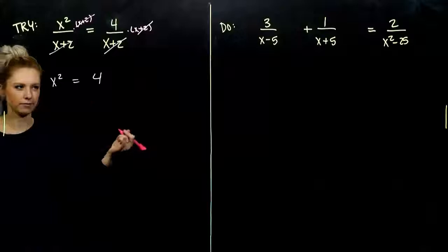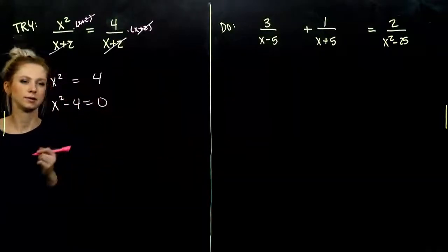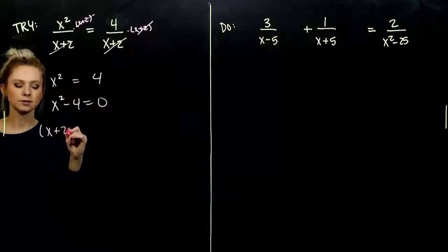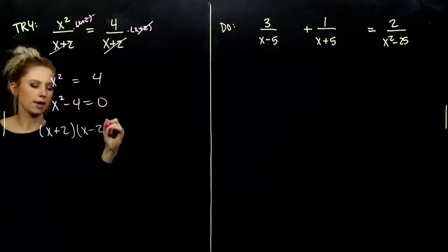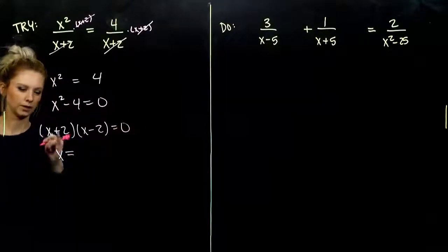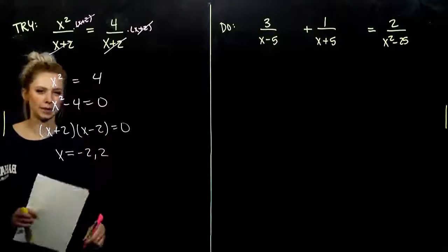We have a quadratic, so we need everything on one side. 4 had to move. And what did this factor into? Difference of squares with x and 2 as our terms. So, what does that tell me for an x value? It can either be negative 2 or positive 2 coming out.